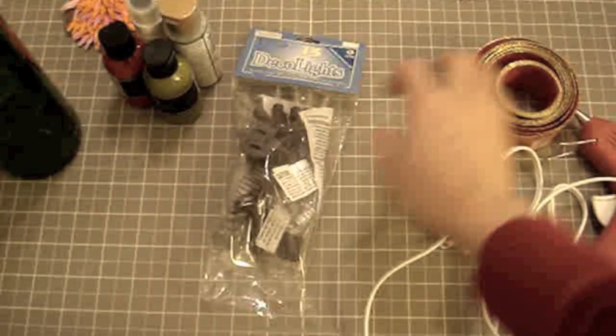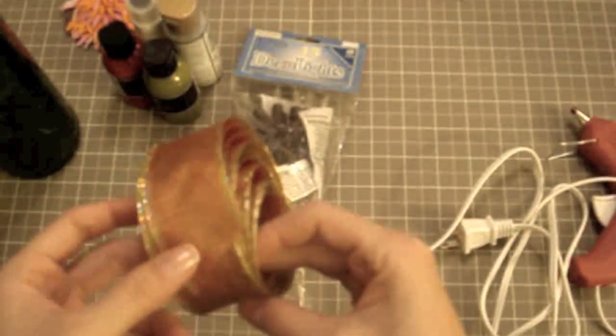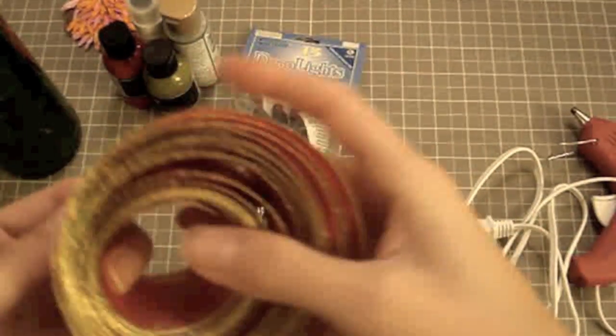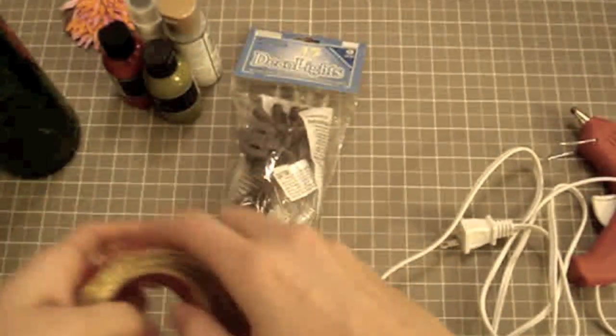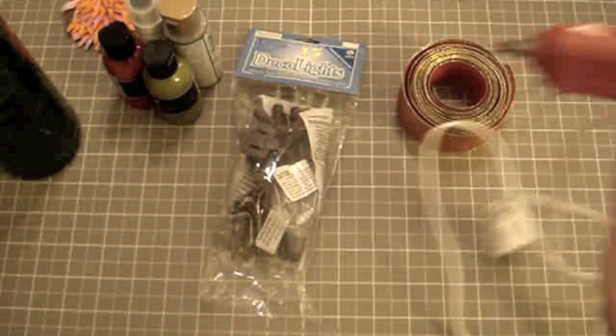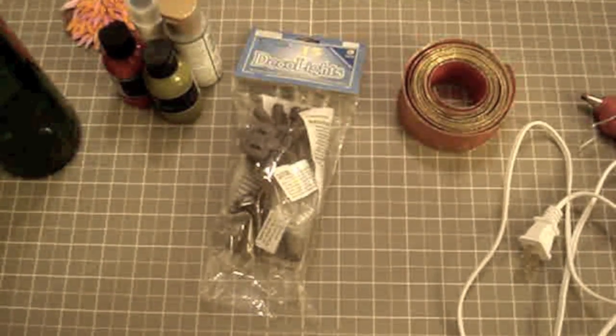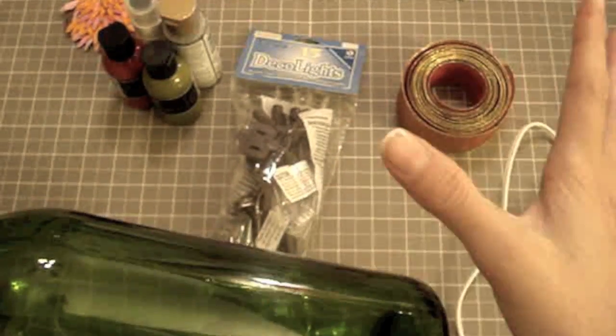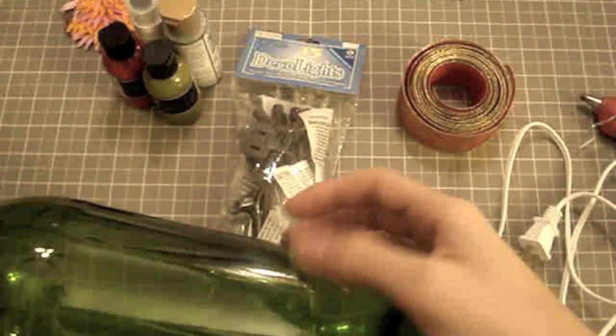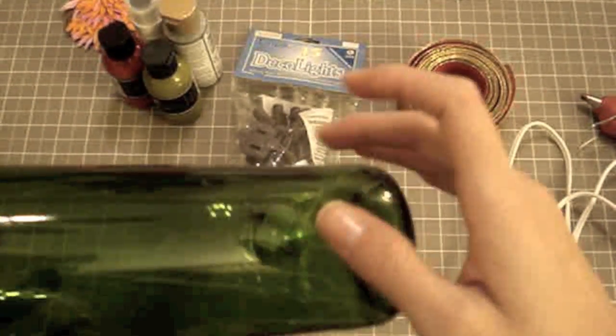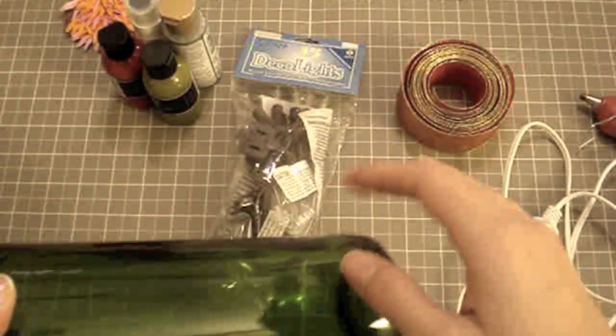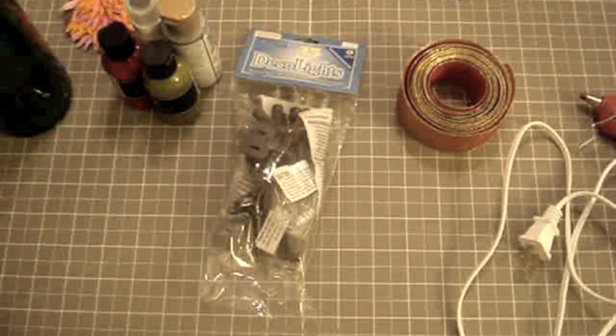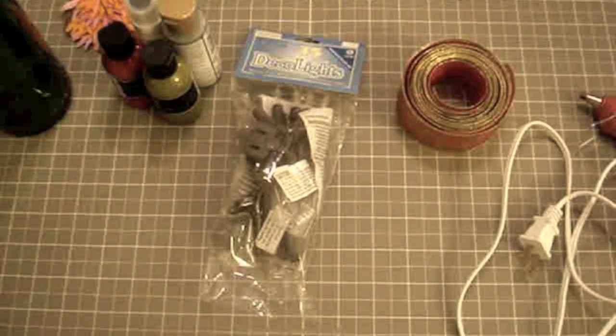Then you're going to want some decorative ribbon. This is some wired ribbon that I kept from a present from last year's Christmas. You're going to need your glue gun and also any kind of sealer that you want to put on your paint so it doesn't wear off or chip off over time. You could use Glossy Accents, Crystal Effects, any kind of sealer like that.